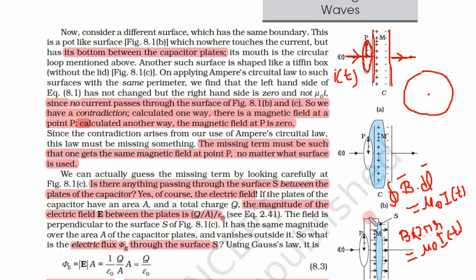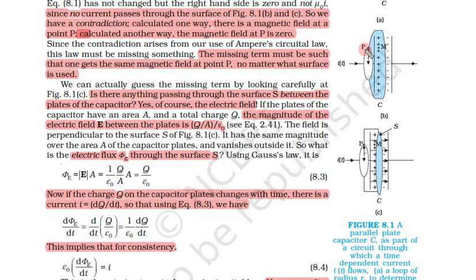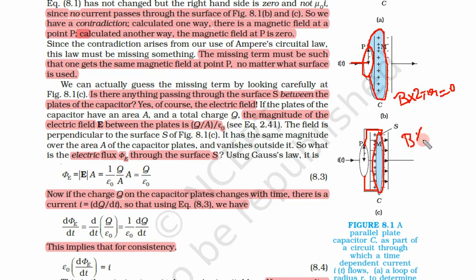When we chose surfaces differently — surfaces enclosing the current but not touching it — we got different results. In the second case, the surface was shaped like a pot, open on one side, not touching any current. So the left-hand side remains B × 2πr, but the right-hand side is 0. Similarly, with a tiffin box shaped surface (open lid), B × 2πr again equals 0, because no current passes through that surface.